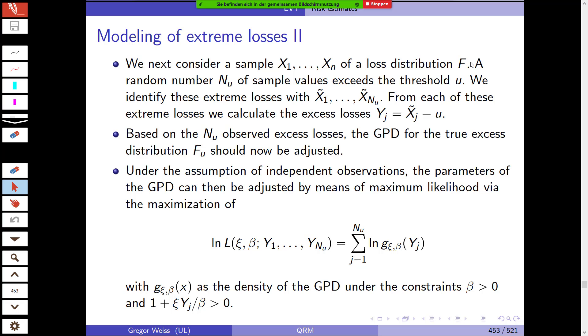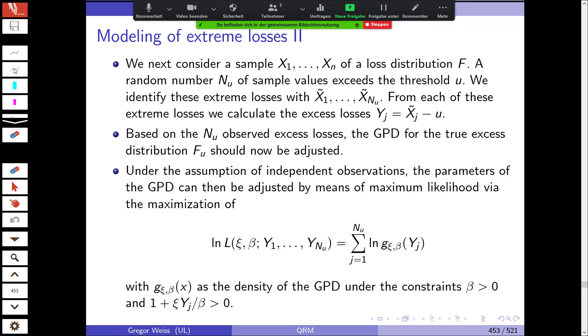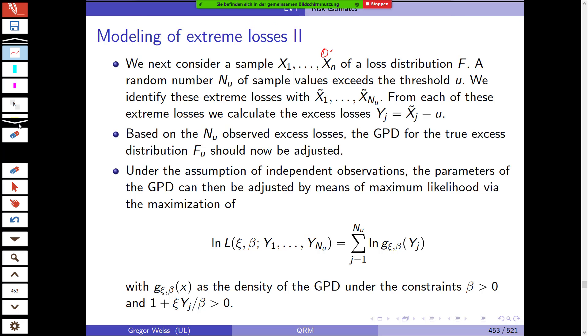Next we consider a sample X_1 through X_N of our loss distribution F, and a random number N_u of sample values exceed the threshold U. We identify these extreme losses with X-tilde-1, X-tilde-2 through X-tilde-N_u. For example, we might have 10,000 observations and we're looking at 200 observations.